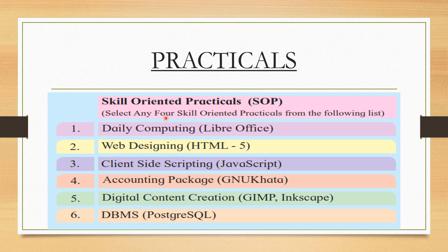This is under the normal situation. Now for the COVID situation, we are going to see how much the portion has been reduced — which practicals are compulsory and which are not. In general, without COVID you would have to do any four from six. Regarding daily computing — this is LibreOffice. You all know MS Office; MS Office works in the Windows operating system, but LibreOffice works in the Linux operating system. They are different operating systems.